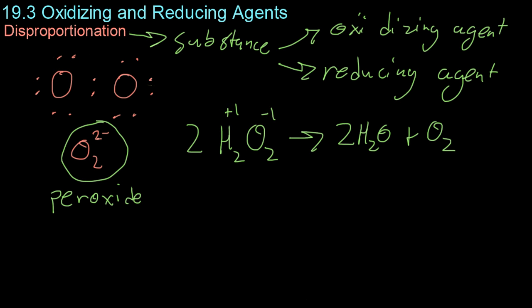However, when you look over here, because you form elemental oxygen, one oxygen reduces, or two oxygens reduce to form, or oxidize, rather, to form a neutral oxygen molecule with an oxidation number of zero.